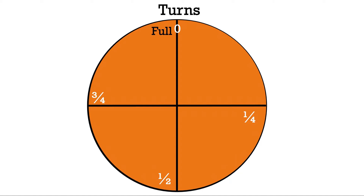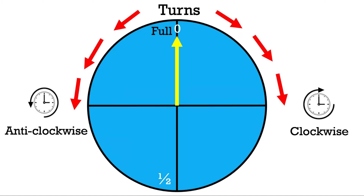Now let's add the words anticlockwise and clockwise to the circle so you can see what is happening. Clockwise goes to the right; anticlockwise goes to the left.